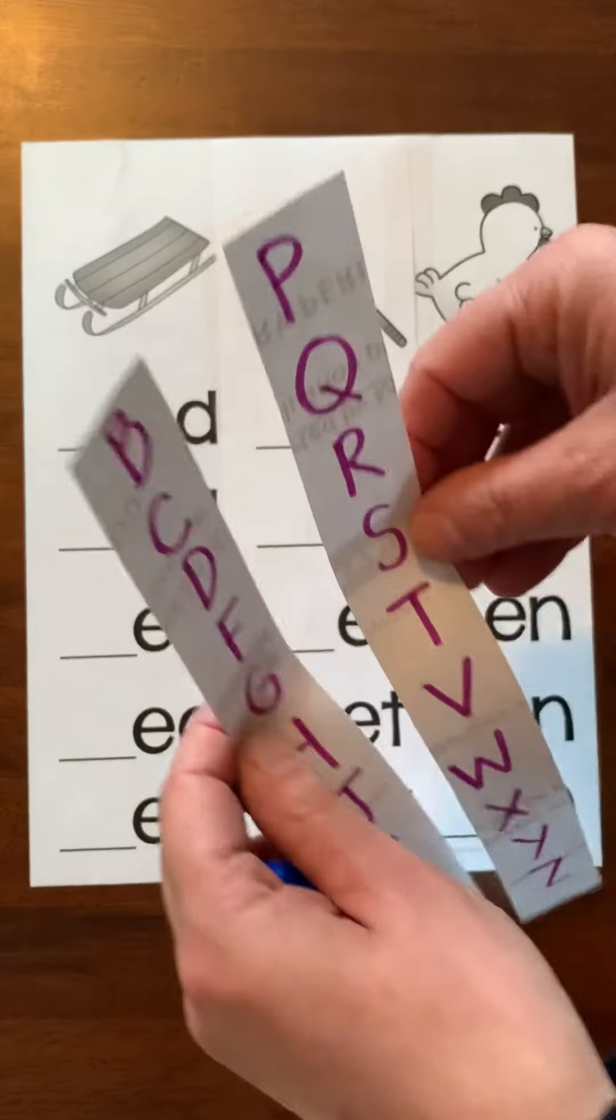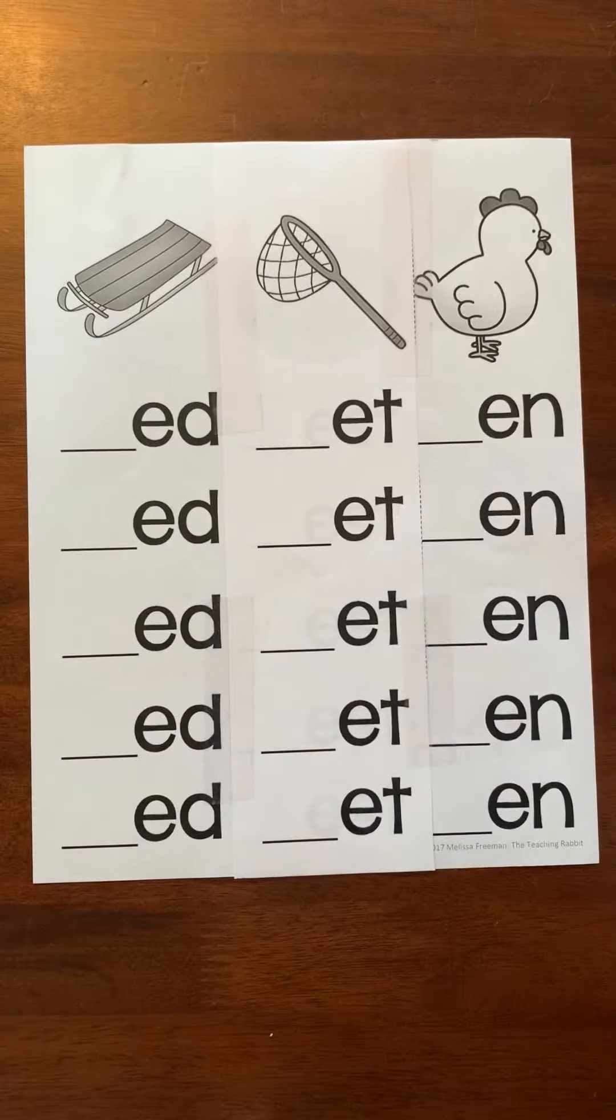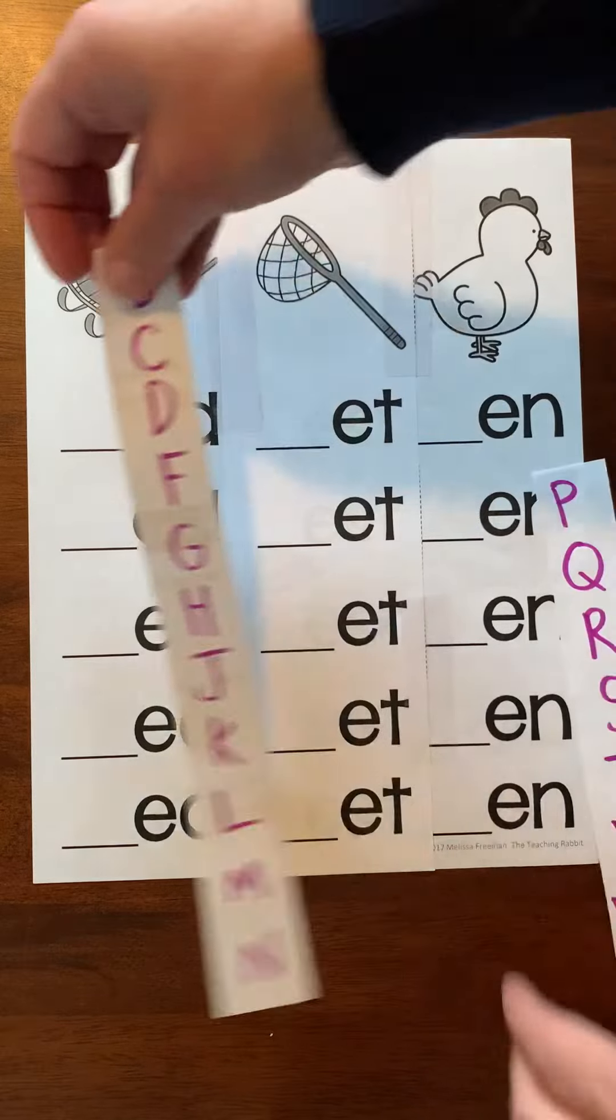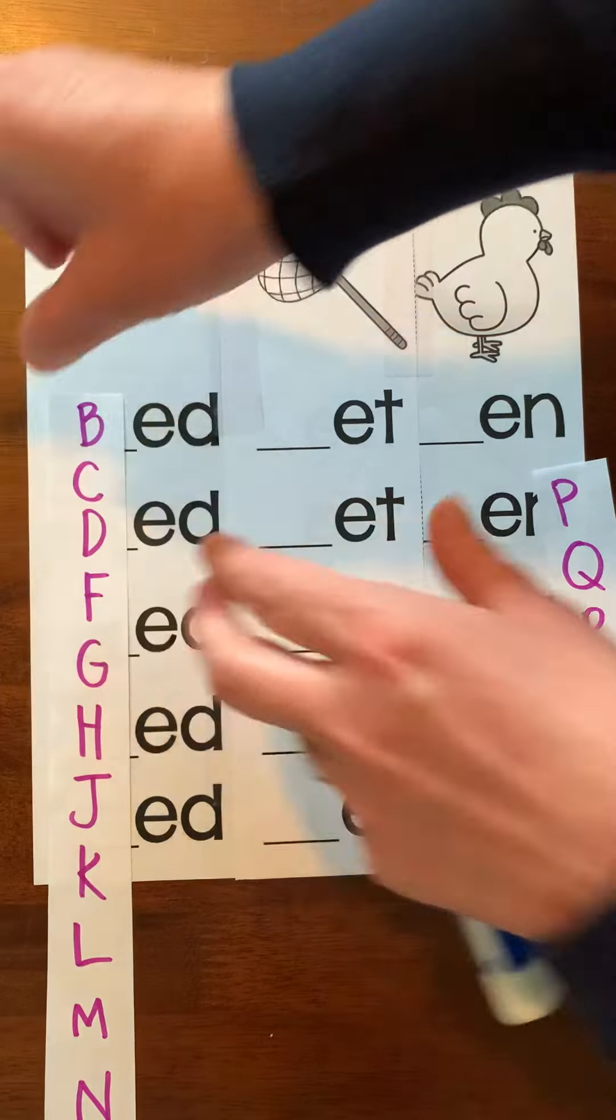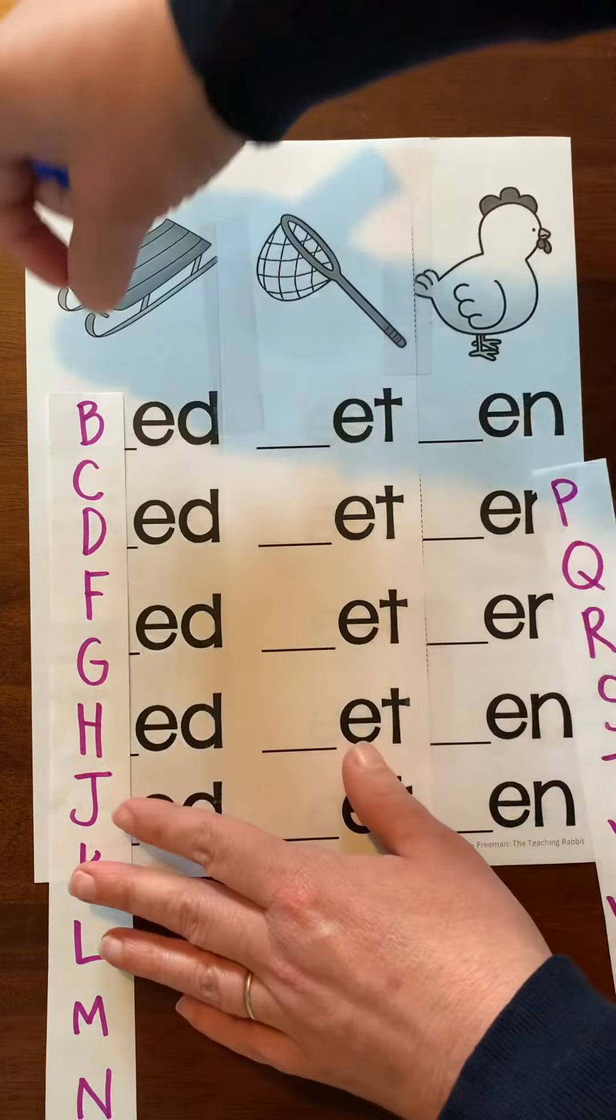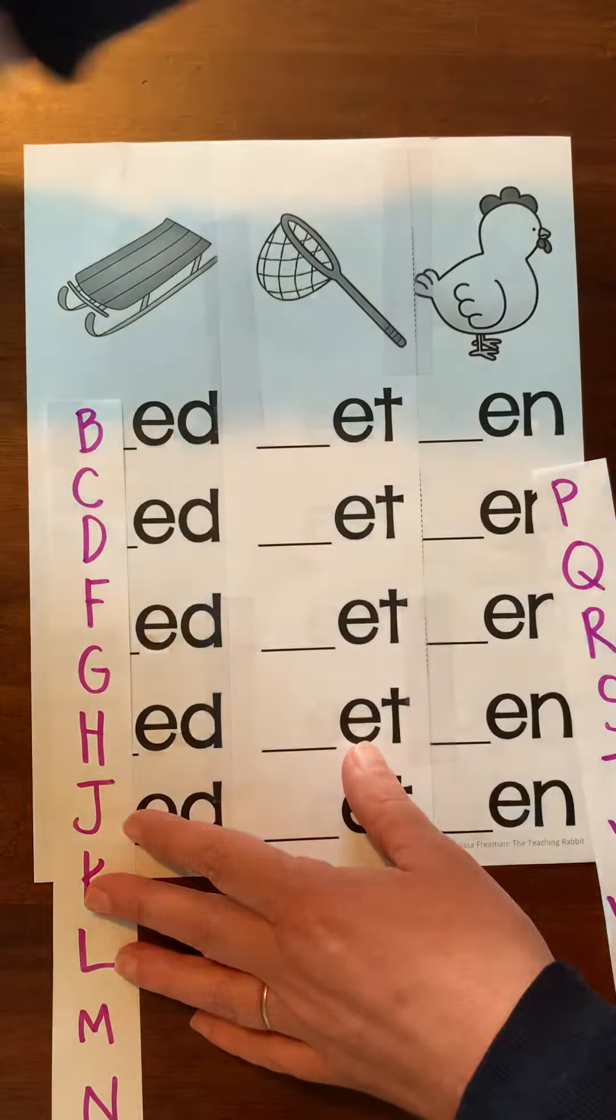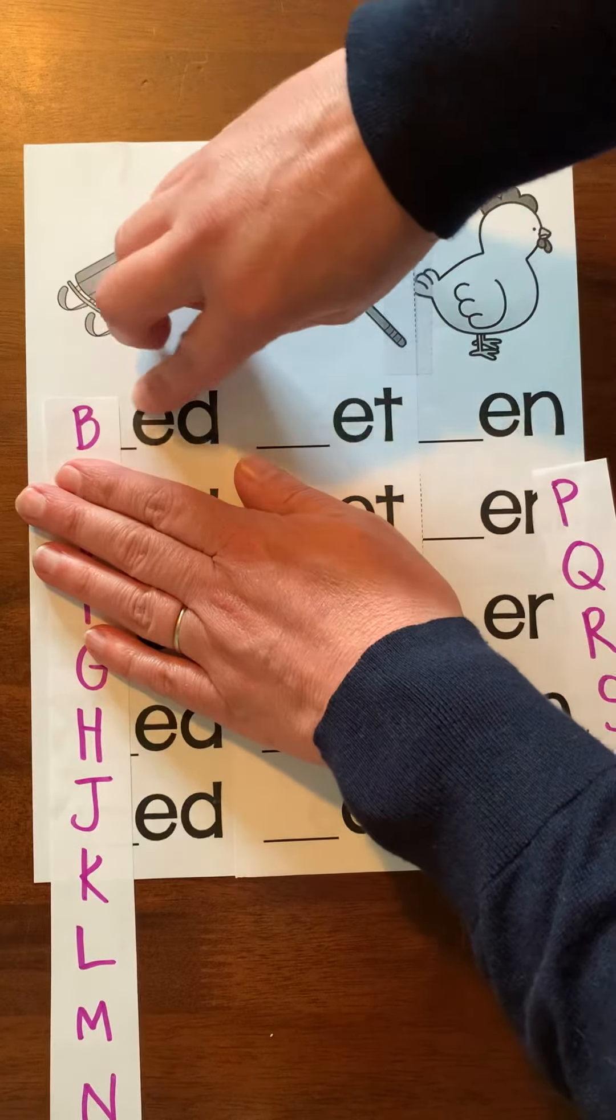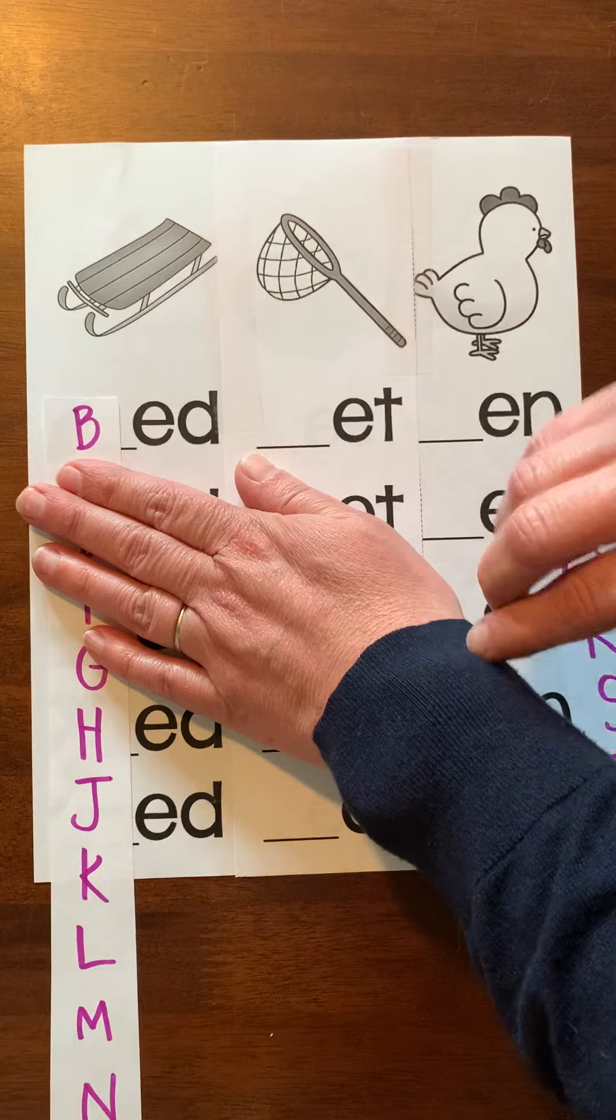You're going to want to get out those strips of paper you had last time. We'll be using these for a few weeks. Take your strip again, just like we did last time with the A's. We're going to go through this and make some sounds. Make the beginning sound and then the ending and see if it makes a word.